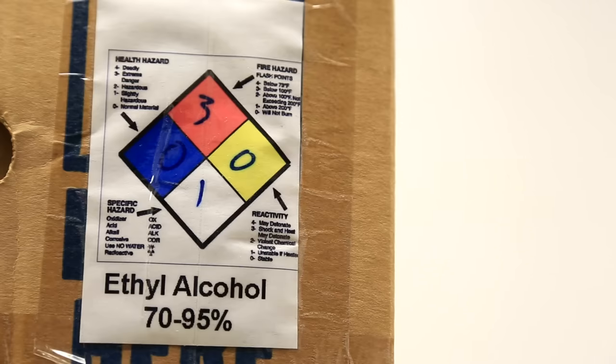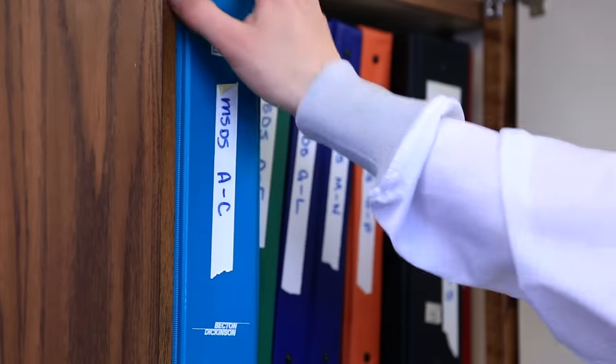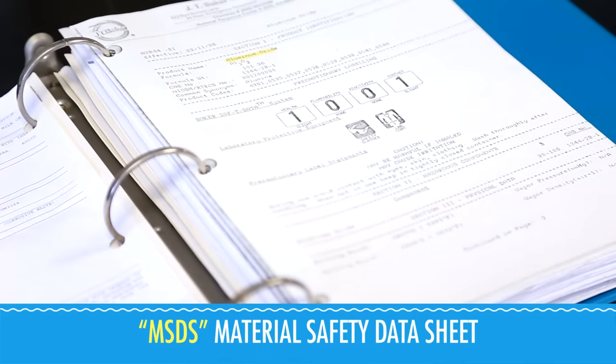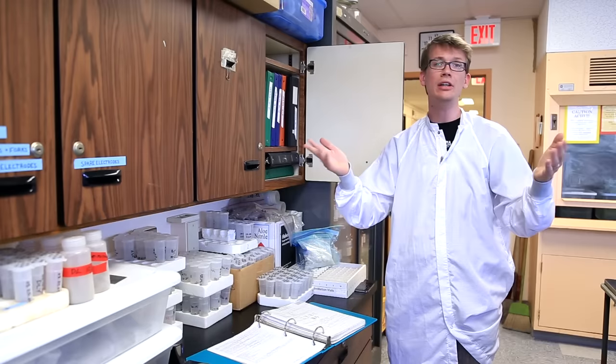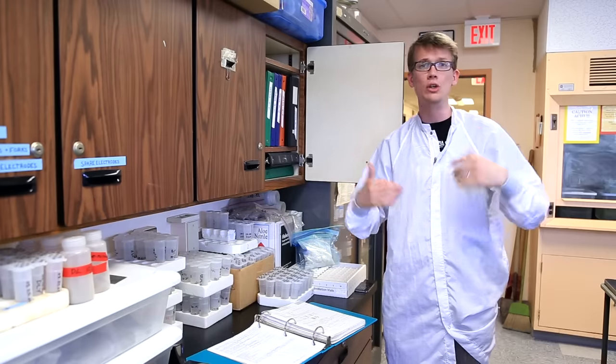And a four in reactivity means that it is capable of exploding at room temperature. The little area underneath is for any extra information, like if it's radioactive or reacts violently with water or something. If you ever need to know more about a chemical and what it might do to you or to the world, there's the good ol' MSDS, the Material Safety Data Sheet. Every chemical has one, and it'll tell you all the terrible things that it might do to you.